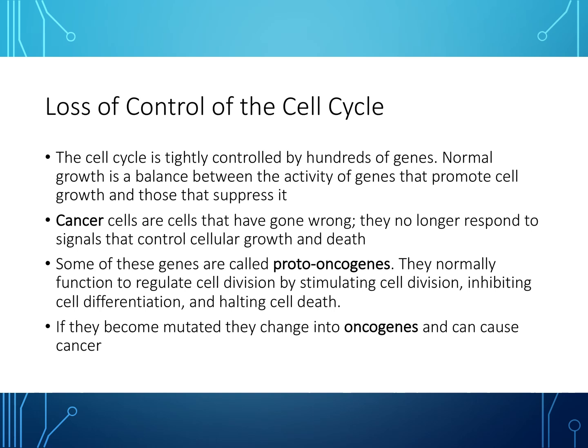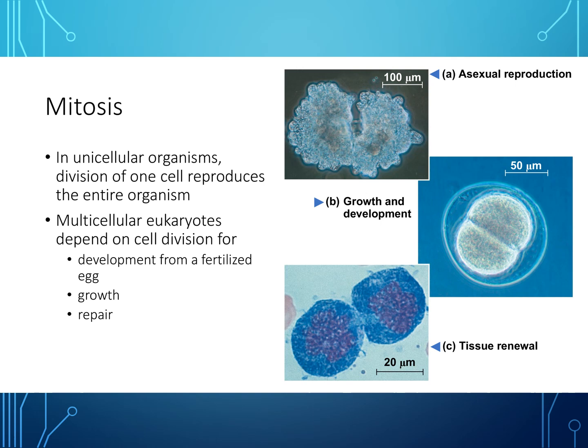What happens when you lose control of the cell cycle? The cell cycle is tightly controlled by hundreds of genes. Normal growth is a balance between genes that promote cell growth and those that suppress it. Cancer cells no longer respond to signals that control cellular growth and death. Some of these genes are called proto-oncogenes, which normally regulate cell division by stimulating division, inhibiting cell differentiation, and stopping cell death. If these proto-oncogenes become mutated, they change into oncogenes, which can result in cancer.